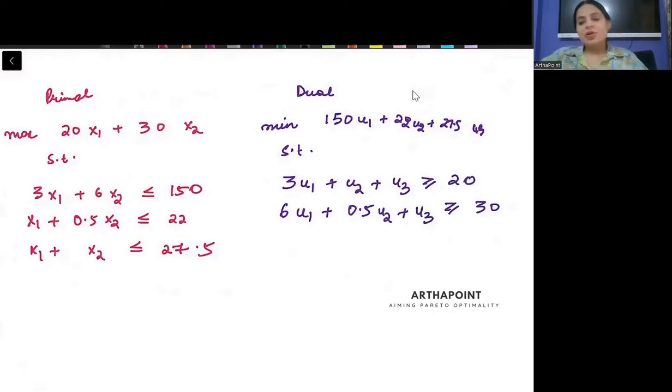Why was I able to write this even without seeing it back? Because the primal and dual, they form a method. Creating the dual is very easy if you know the primal. The primal has two variables and three equations - two variables, three equations.